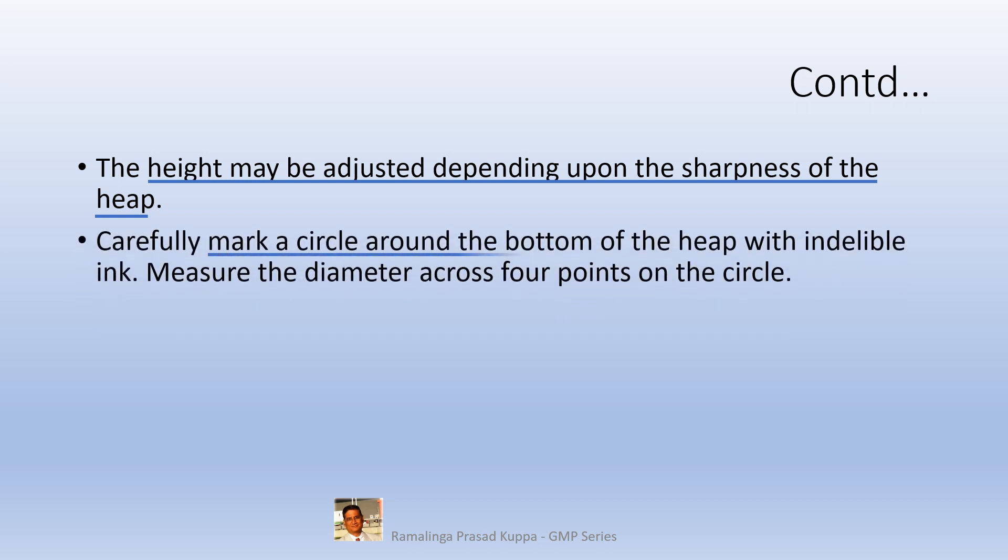Clearly mark a circle around the heap with indelible ink. Measure the diameter across four points on the circle. So mark the circle with pencil or pen carefully around the heap on the paper. Remove the powder from the paper and transfer it into the container. Measure the diameter across the circle at 4 points. Take average of the diameter in centimeters.